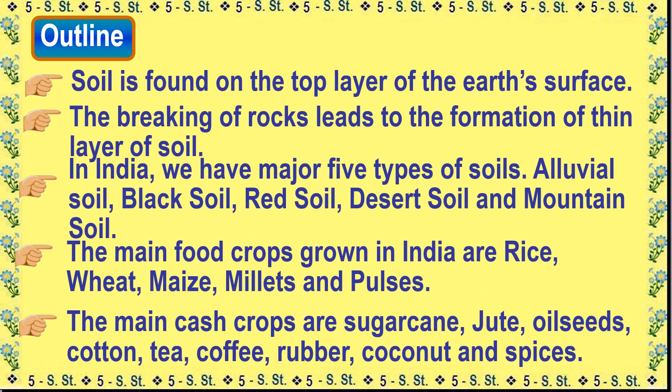Outline: Soil is found on the top layer of the earth's surface. The breaking of rocks leads to the formation of a thin layer of soil. In India, we have major types of soils: alluvial soil, black soil, red soil, desert soil, and mountain soil. The main food crops grown in India are rice, wheat, maize, millets, and pulses. The main cash crops are sugarcane, jute, oilseeds, cotton, tea, coffee, rubber, coconut, and spices.